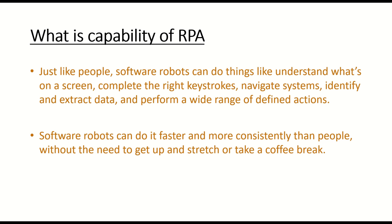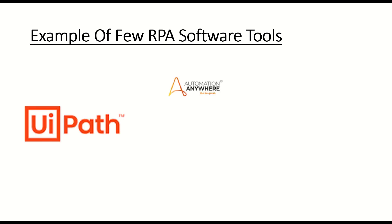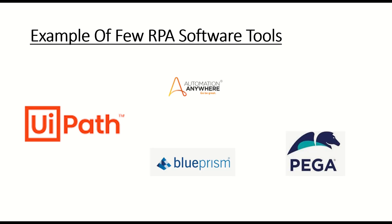Next, we will see some examples of RPA software tools. In the market, there are more than 50 different RPA tools, but the top leaders are UiPath, Automation Anywhere, and others.